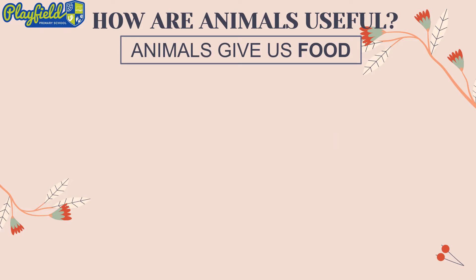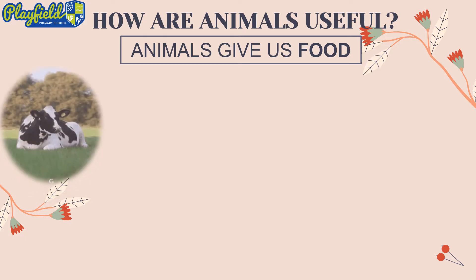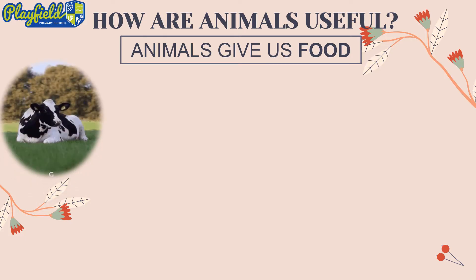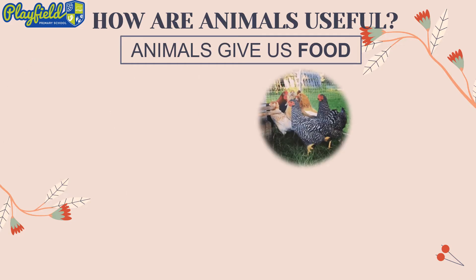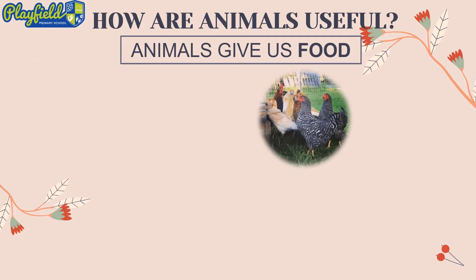Animals are useful because they give us food. For example, cow. Cow give us milk to drink and also cheese. Next, chicken.